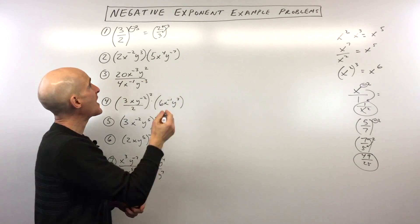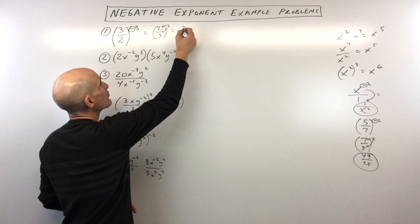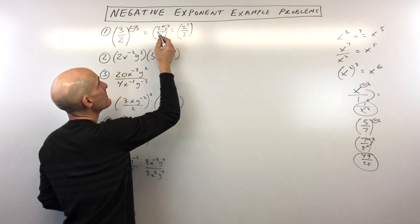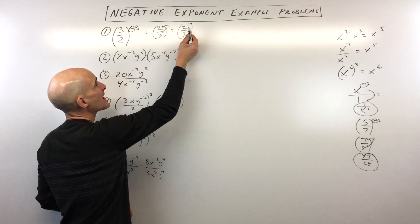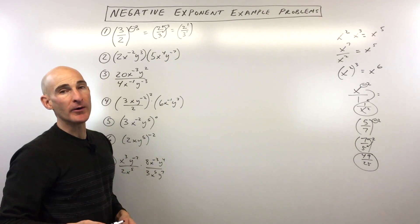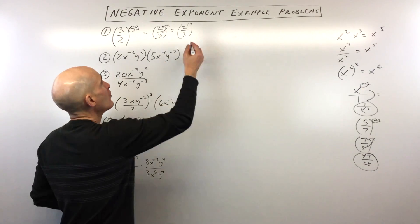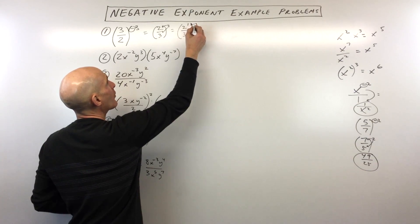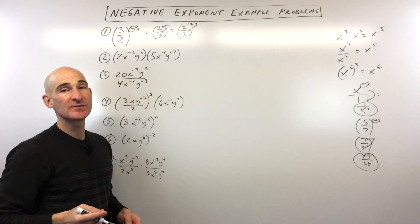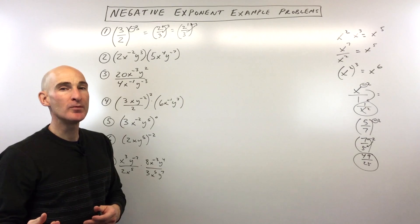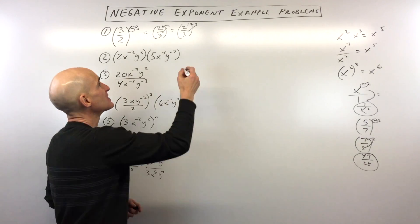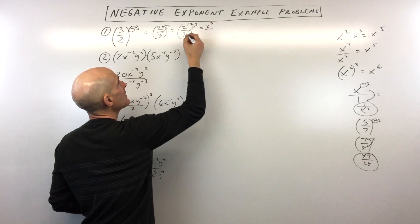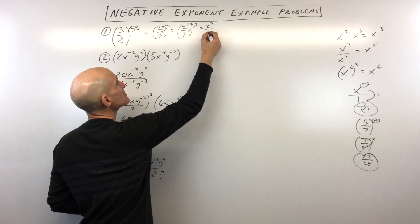Notice there's not any exponents here. This is 2 to the first and 3 to the first, right? So even though you don't see an exponent, it's still raised to the first power — they just don't write it. When you have a power to a power, meaning an exponent raised to another exponent, you multiply those exponents together. So 1 times 3 gives us 3, and same thing here, 1 times 3 gives us 3.